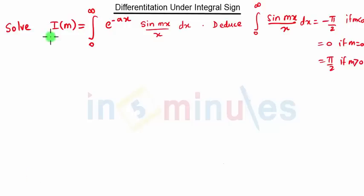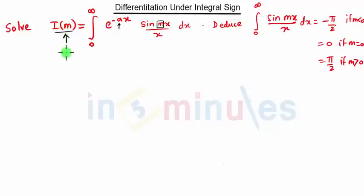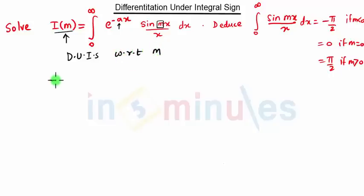Hello everyone, welcome to 'In 5 Minutes'. In this video we are going to see the next problem on DUIS. The question is: solve this integration and hence deduce these things. We have two constants a and m, and we are given I of m, which means we have to perform this DUIS with respect to m only.